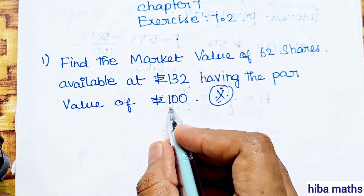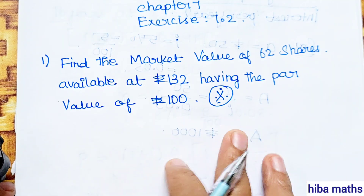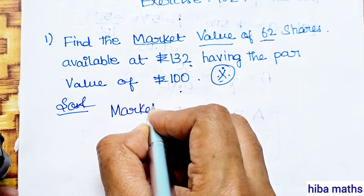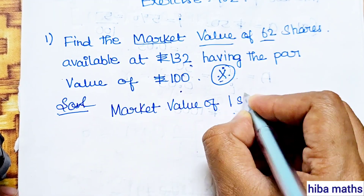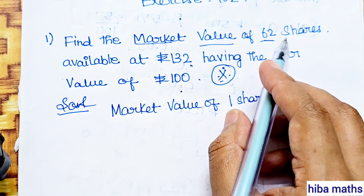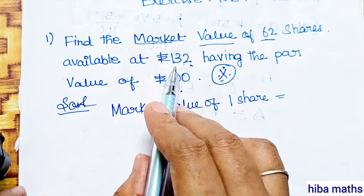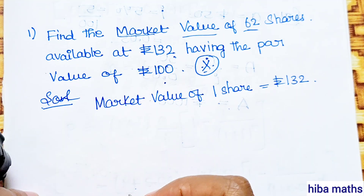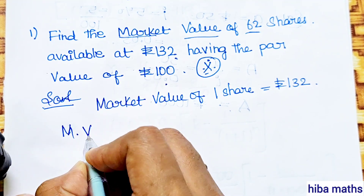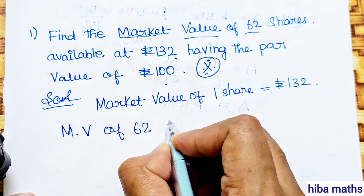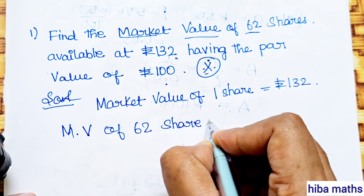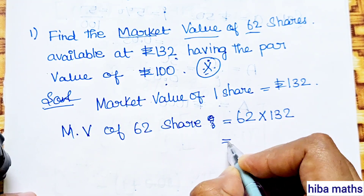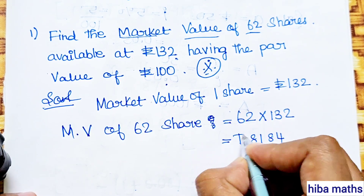The face value is rupees 100. Market value of one share is rupees 132. So, market value of 62 shares: 62 shares into 132, which gives us rupees 8184. That is the market value of 62 shares.